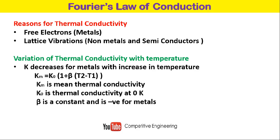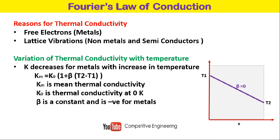The variation of temperature with thickness depends on the beta value. When beta equals zero, thermal conductivity is constant and the temperature variation is linear. For non-metals, beta is greater than zero, giving a curved temperature profile. For metals, beta is less than zero, giving a different curved profile. By computing the mean thermal conductivity KM from K0 and beta, we can use the KM value in Fourier's law of conduction to find the average heat transfer rate.